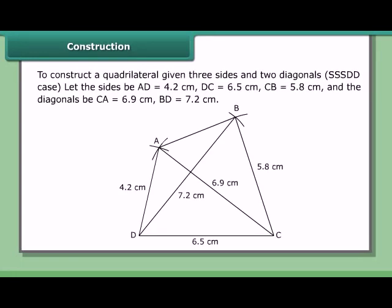To construct a quadrilateral given three sides and two diagonals — the SSSDD case — let the sides be AD = 4.2 cm, DC = 6.5 cm, CB = 5.8 cm, and the diagonals AC = 6.9 cm and BD = 7.2 cm. The two triangles we can construct to complete the quadrilateral are BCD and ACD.